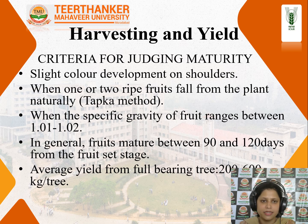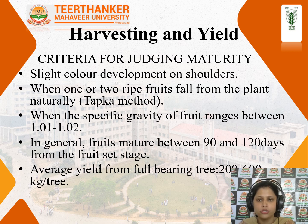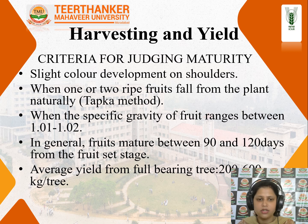Harvesting and yield of mango: the maturity indices for mango include slight colour development on the shoulders of the fruit, or observation when one or two ripe mango fruits fall from the plant naturally, which is also called the tapka method. The third method is when the specific gravity of the fruit ranges between 1.01 to 1.02. In general, fruits mature between 90 and 120 days from the fruit set stage. The average yield from a full bearing tree is 200 to 600 kg per tree.